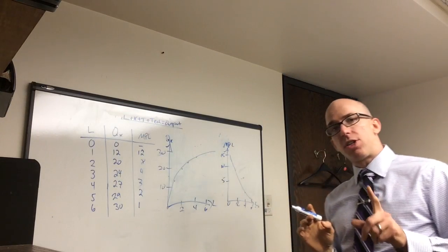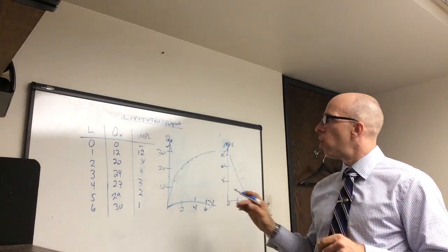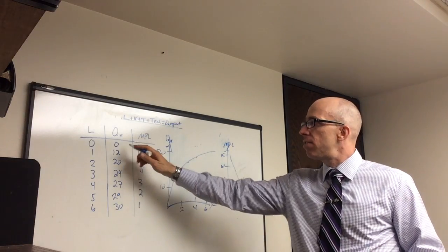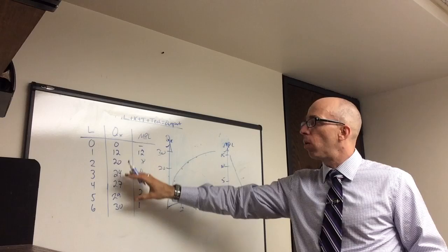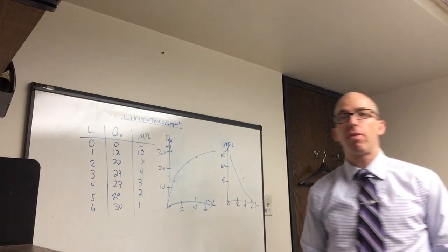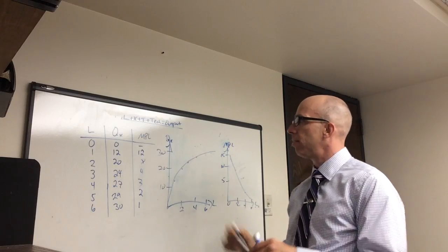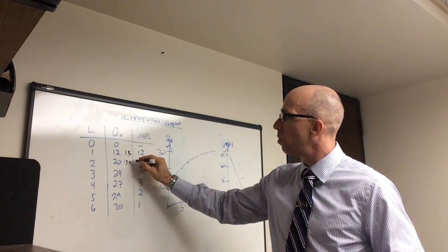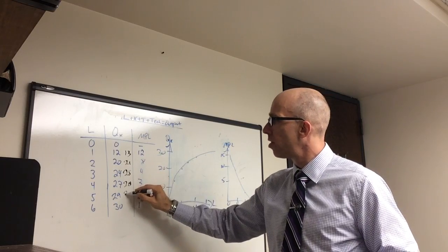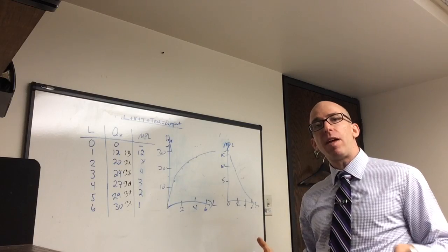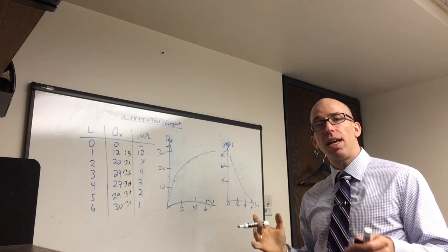Now there's two things I want to show. One is, what would happen if you had some sort of technological improvement? What if each of these workers produced more? What if each producer made one more than the one before it? We could add 13, 21, 25, 28, 30, 31.